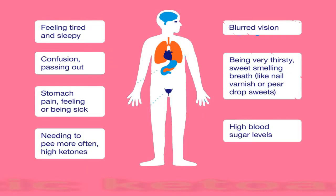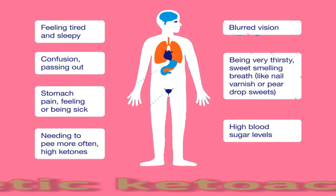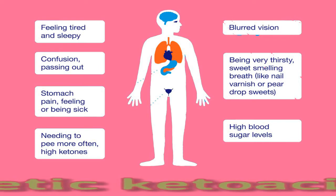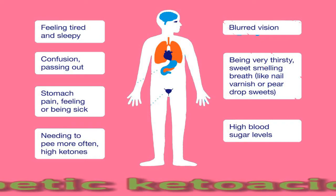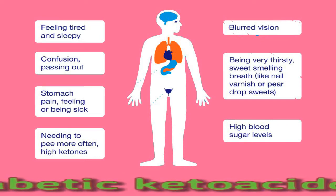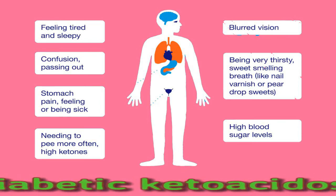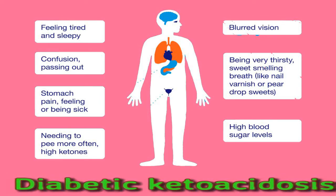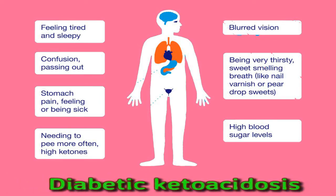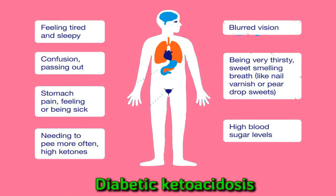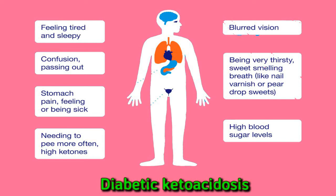Diabetic ketoacidosis is a serious complication of type 1 diabetes that arises when levels of ketones in the blood become too high and the acid level of the blood increases, which can also result in a diabetic coma. Ketone levels can become too high if an individual is using fat rather than sugar as an energy source. This occurs in people with type 1 diabetes for various reasons, including not receiving enough insulin or illness.